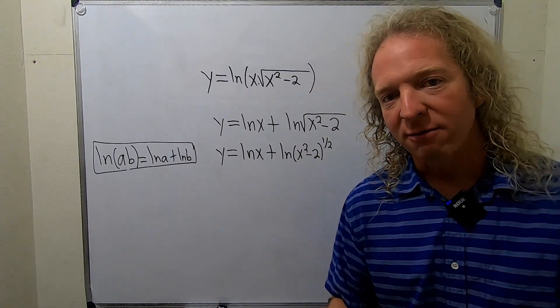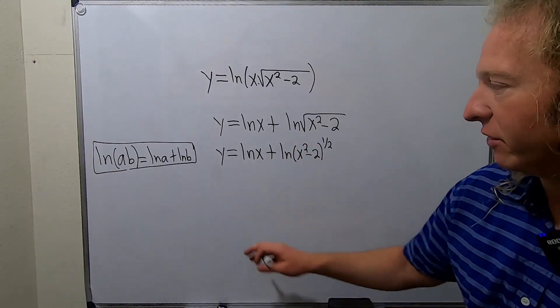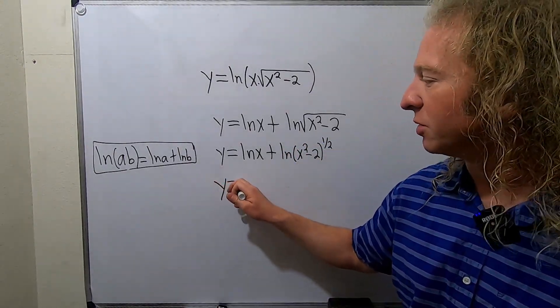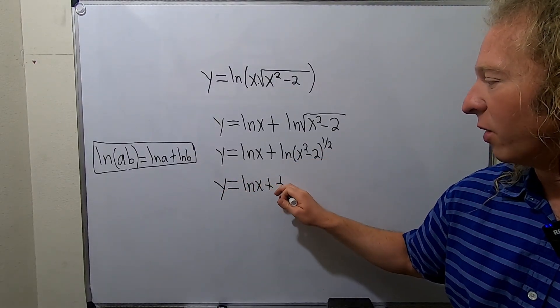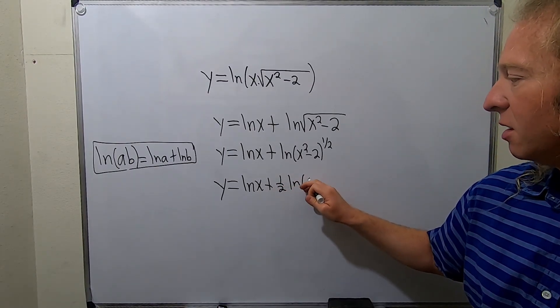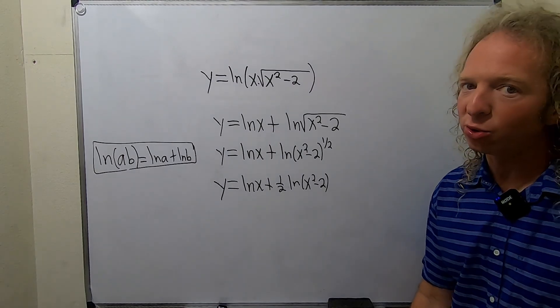You may say, why is that useful? Remember, when you have powers here, you can put them in the front. That's another property of logs. So y equals the natural log of x plus, let's put the power in the front. So 1 half ln x squared minus 2. That's called the power rule of logs.